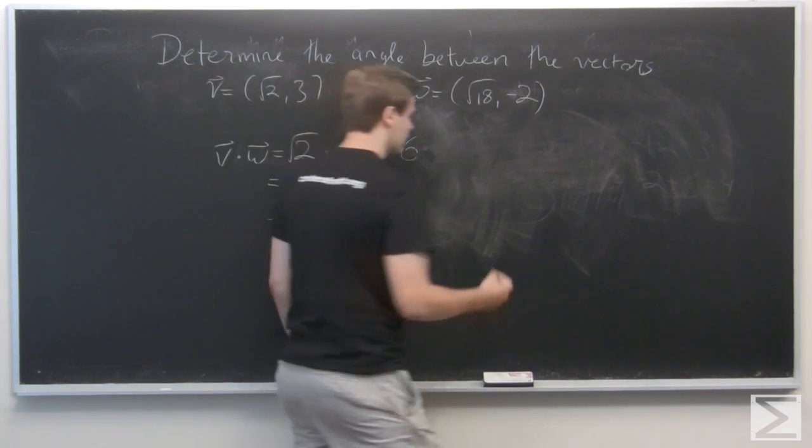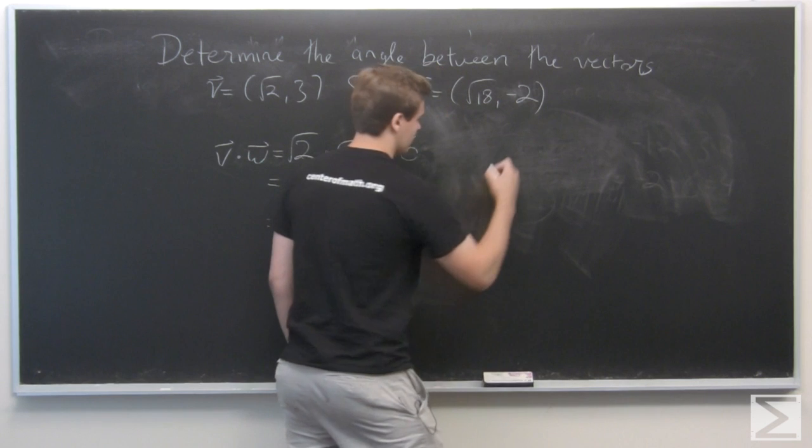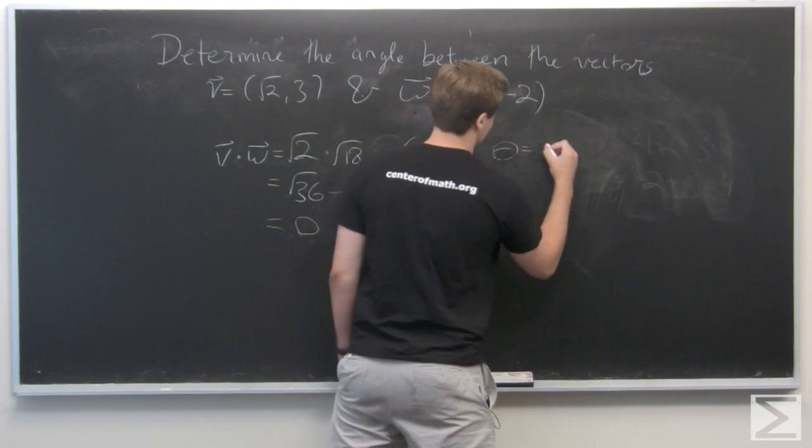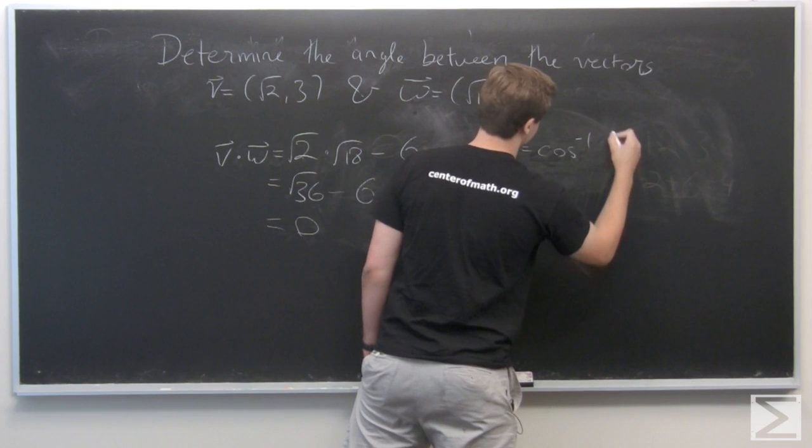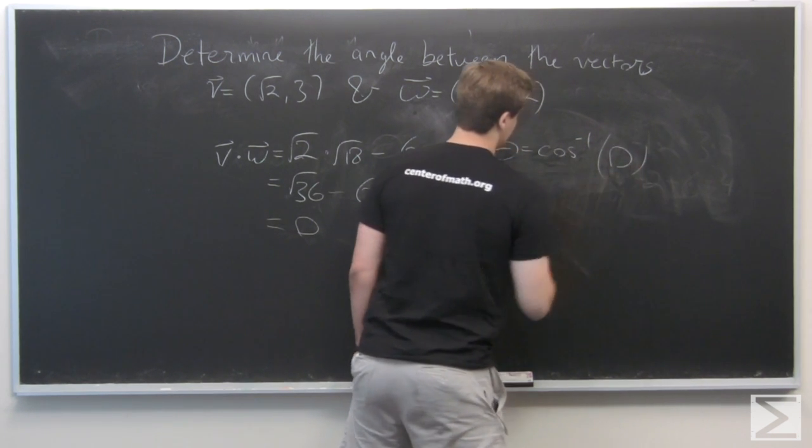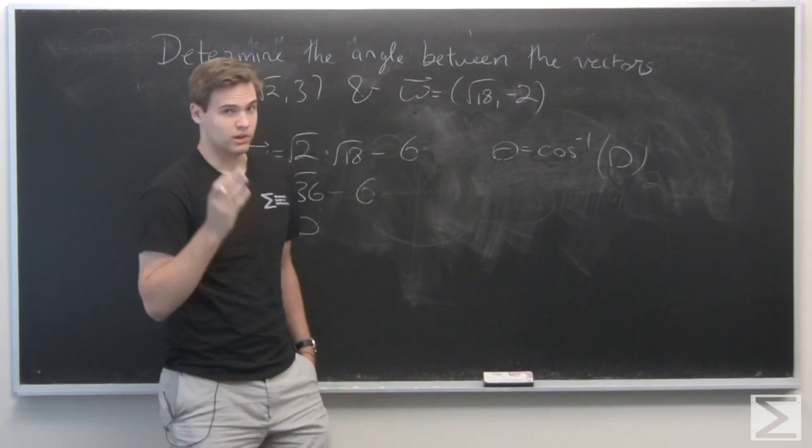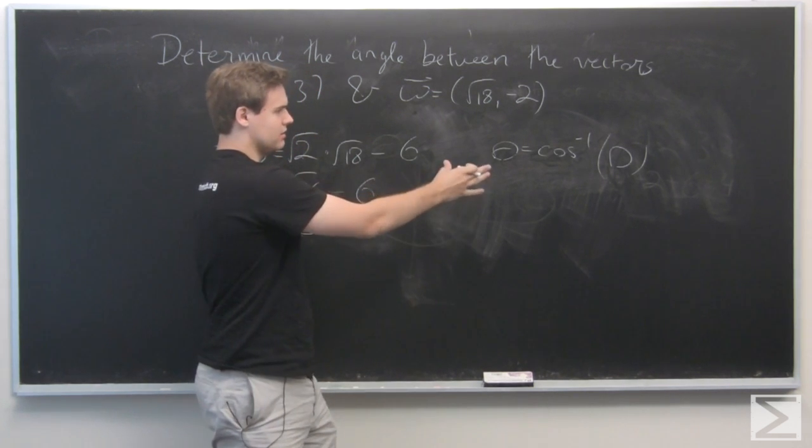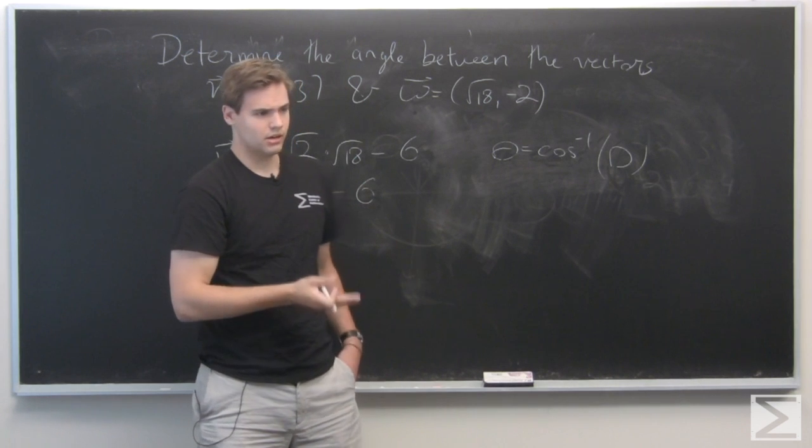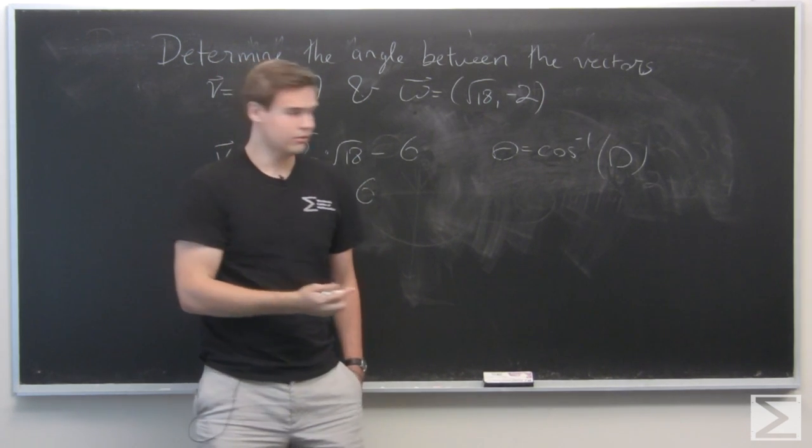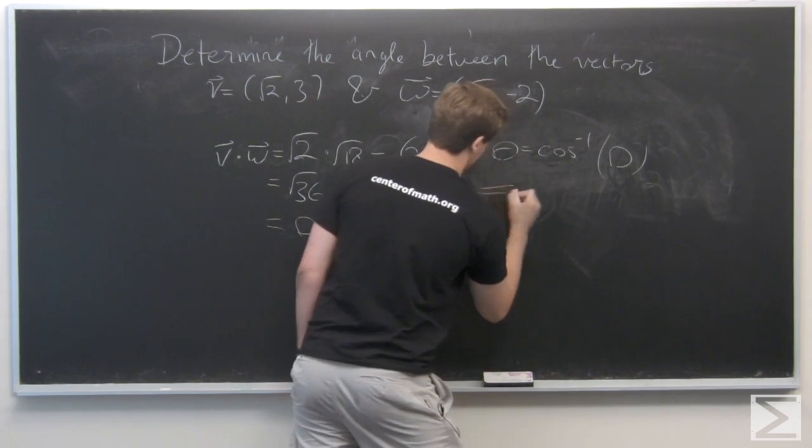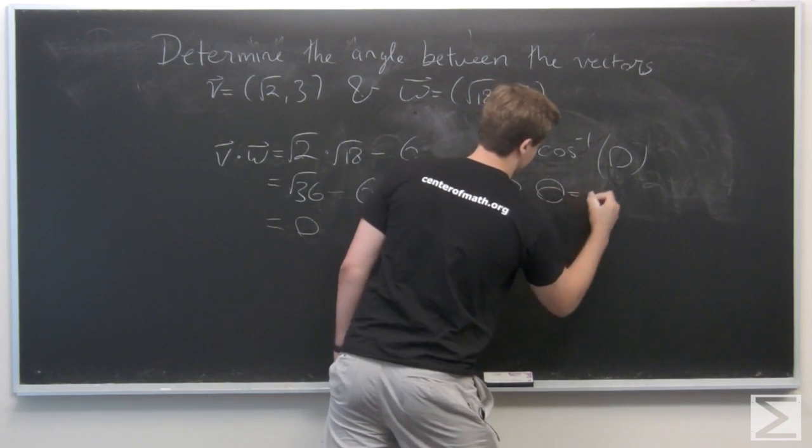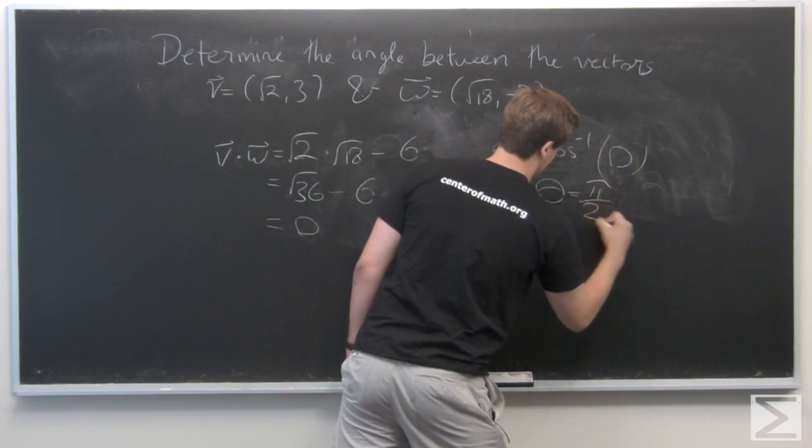So if you recall the definition of the angle here, we see that it's going to be theta is inverse cosine of 0. Since we're only considering angles between 0 and pi, we see that this implies that theta is pi over 2. That is, the two vectors are orthogonal.